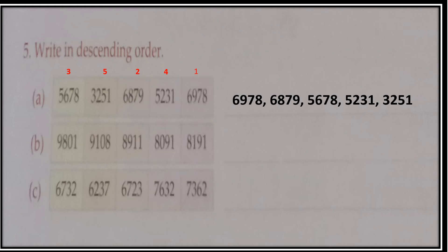So your descending order for Part A will be: 6978, 6879, 5678, 5231, 3251. Now Part B — same way, compare the thousands place. Three numbers have 8 and two numbers have 9. Since you are writing descending order, take the biggest first: 9 is greater, so compare those two at the hundreds place — one has 8 and the other has 1. So 9801 comes first, then 9108.